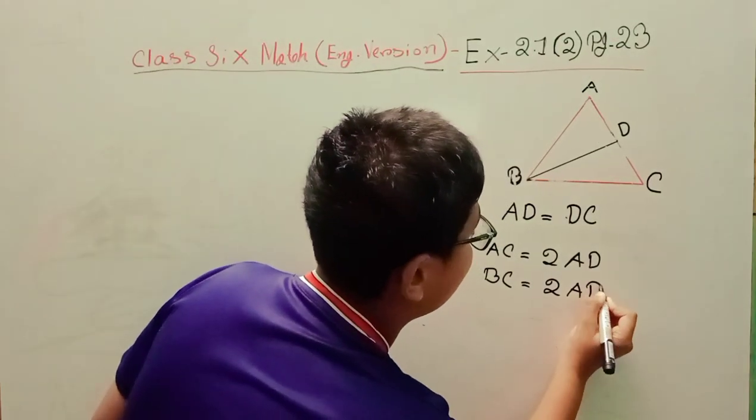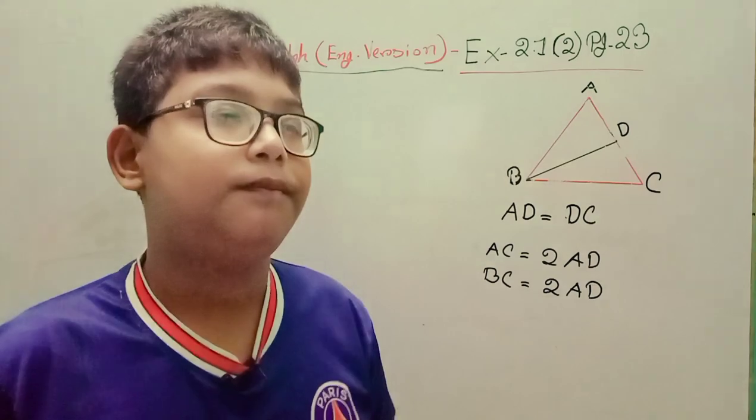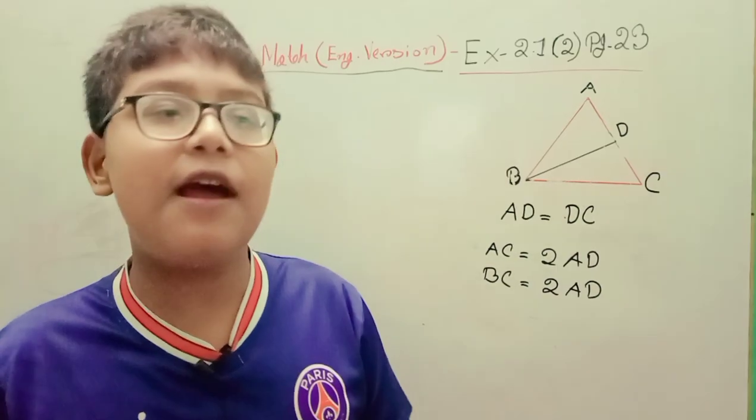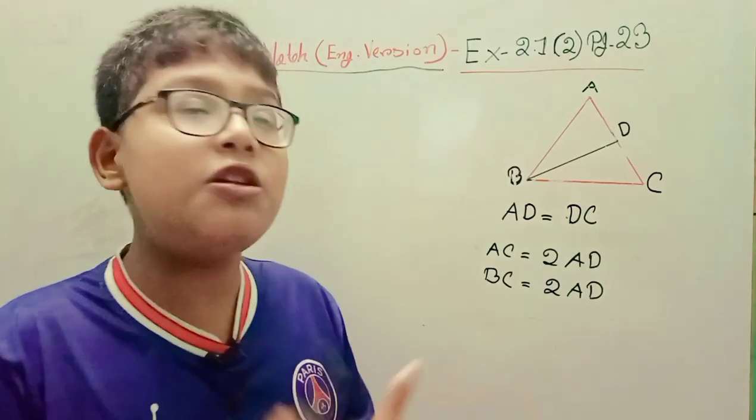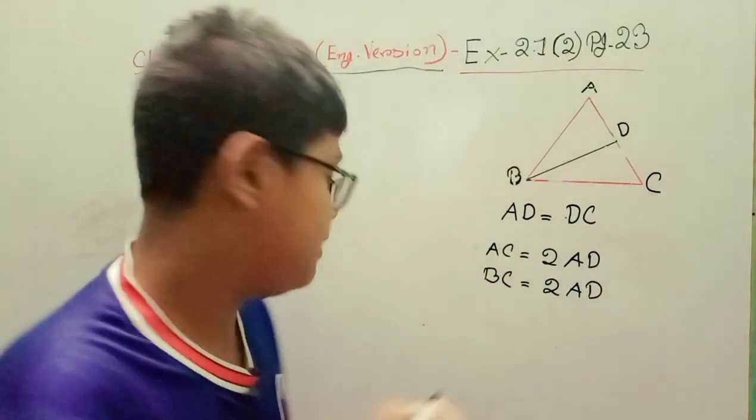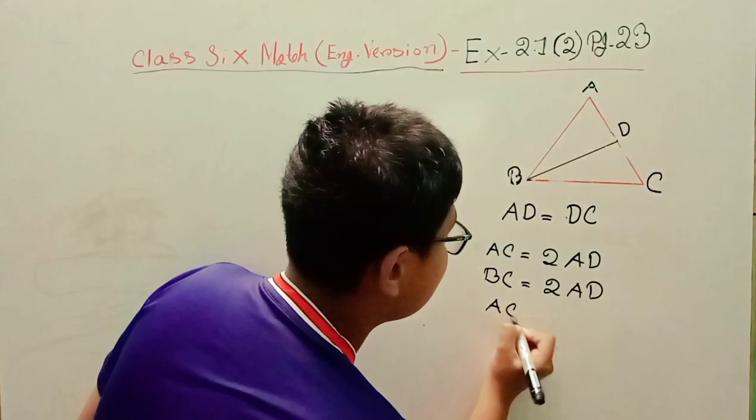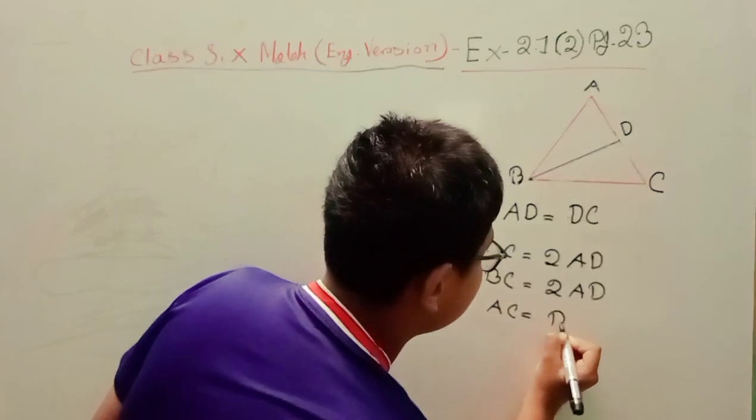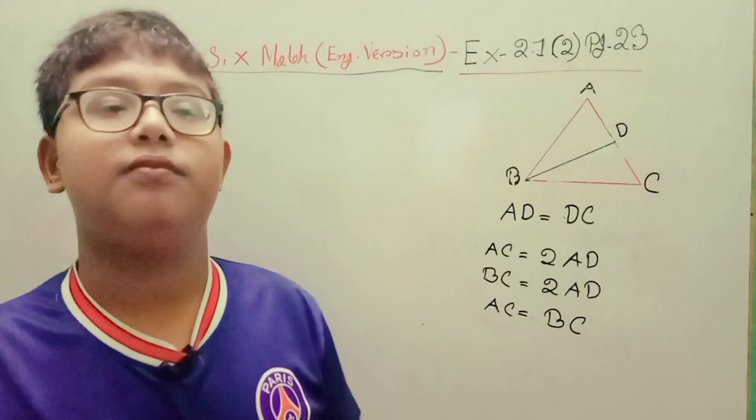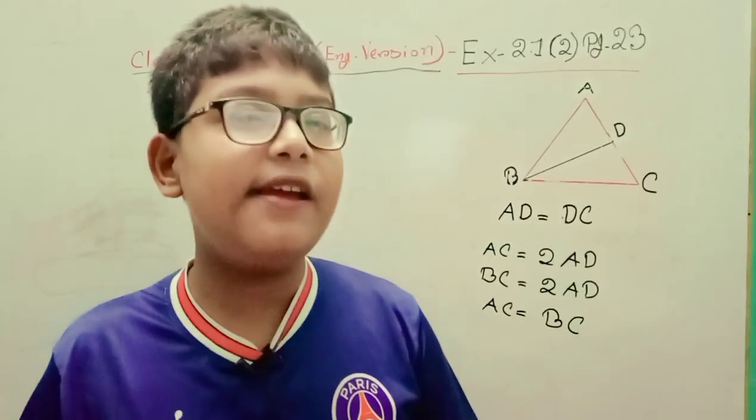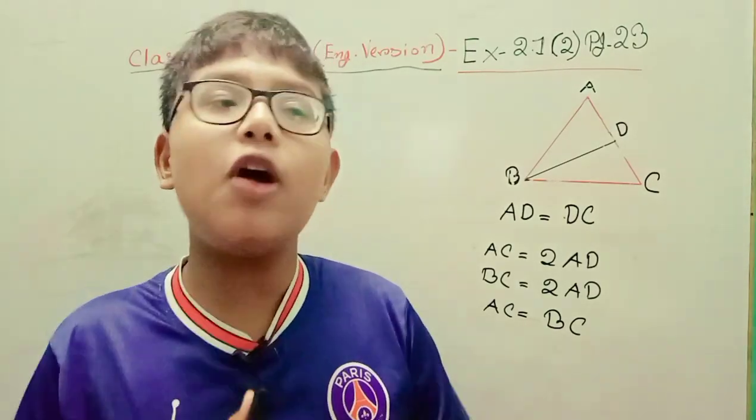Now we got the value of AC equal to 2AD, and BC is also 2AD. It means AC equals BC. They are equal. We know when two sides of a triangle have equal length, we call it an isosceles triangle.